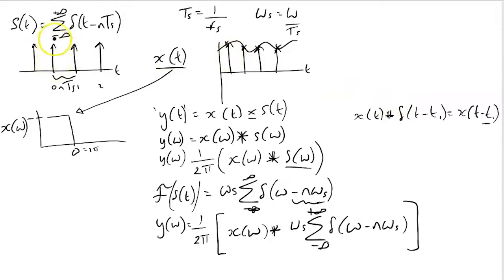The Dirac delta functions only ever integrate to one at these specific points. Therefore the value is only ever going to take on, and this is essentially the sampling element of this function.